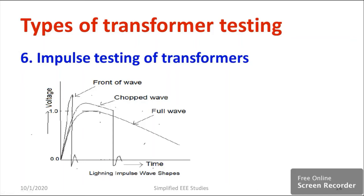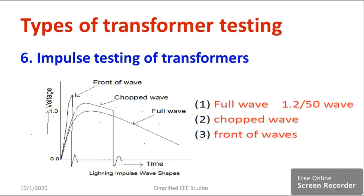These waveforms are generated for testing purposes using an impulse generator. They are directly applied over the transformer insulation and you observe any changes — what about the wave shape, whether you are getting pure waveforms, or if there is any sudden collapse of voltage. The first type is the full wave, the second is the chopped waveform, and the third is the front of wave. If you find any sudden voltage drop or dip, you will know there is a problem in the transformer insulation that cannot withstand lightning and thunder.